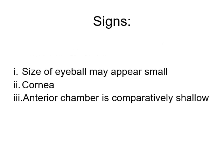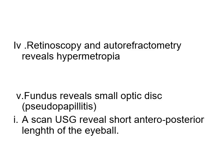Signs of hypermetropia: the size of the eyeball may appear small. The cornea may be slightly smaller than normal. The anterior chamber is comparatively shallow. Retinoscopy and auto-refractometry reveal hypermetropia. Fundus reveals a small optic disc, called pseudopapillitis. A-scan ultrasonography reveals a short anterior-posterior length of the eyeball.